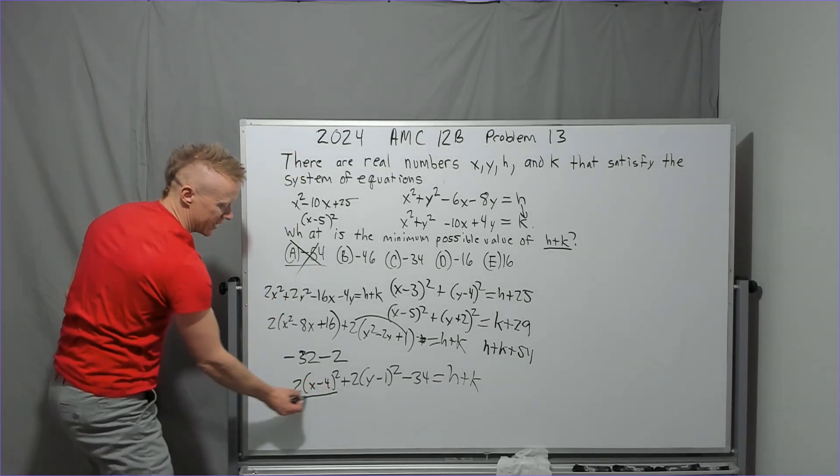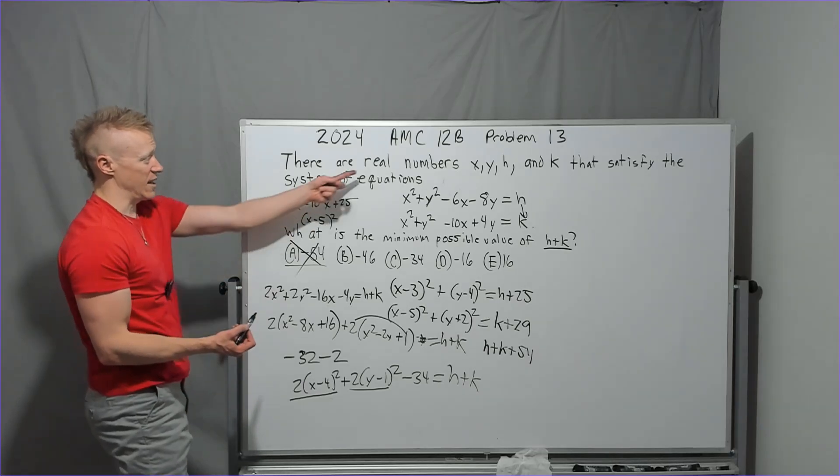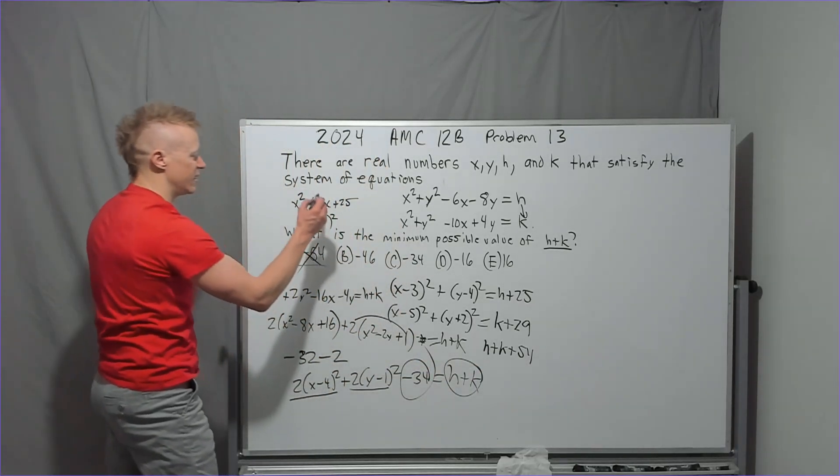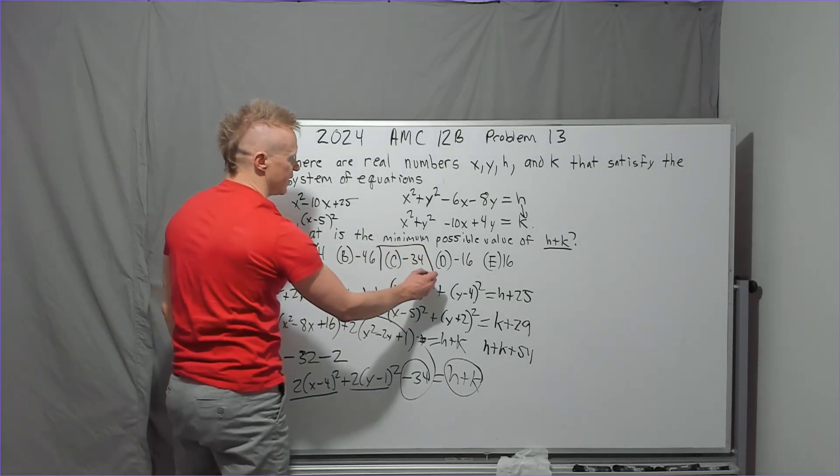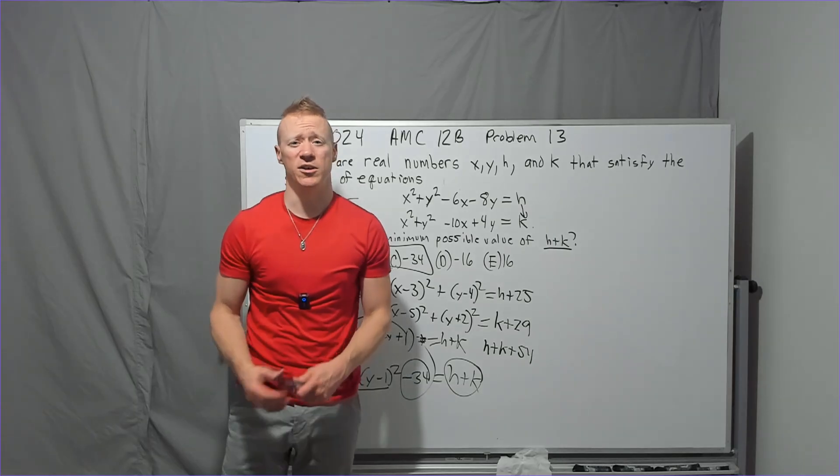Now we can make these perfect squares 0 with x is 4, y is 1. They are both real numbers. What will h plus k equal? Negative 34. Answer choice C. Time to splice and edit. Hope you enjoyed the solution.